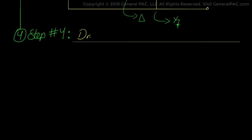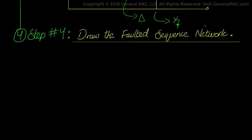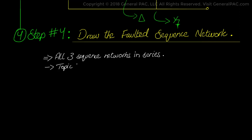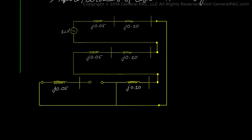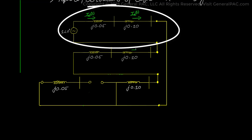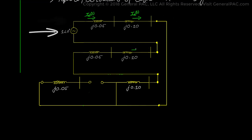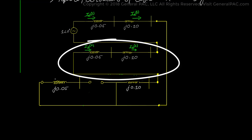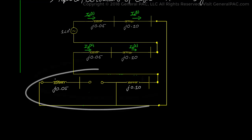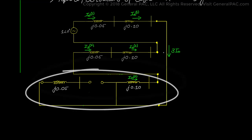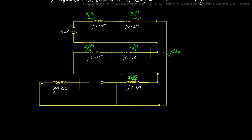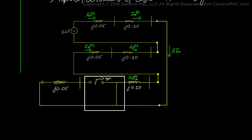In step number 4 we will draw the faulted sequence network. Given that the fault is a single line to ground fault, we will connect all three sequence networks in series, as explained in detail in topic 2 of our series on derivations of sequence network diagrams. The top network is the positive sequence, identified by the voltage source. The middle is the negative sequence — similar to positive but without a voltage source. The bottom is the zero sequence network, which also has no voltage source but accounts for the transformer with an open circuit on the high voltage side and a short circuit on the low voltage side.